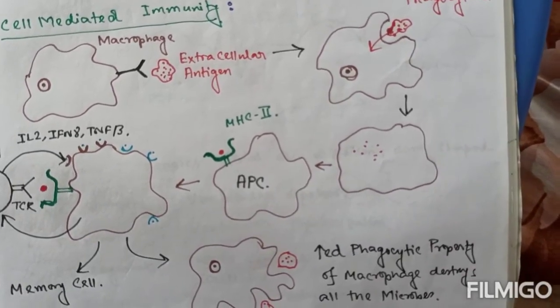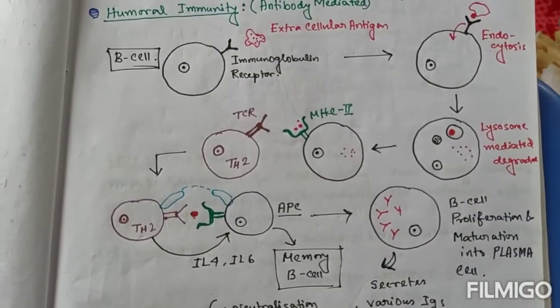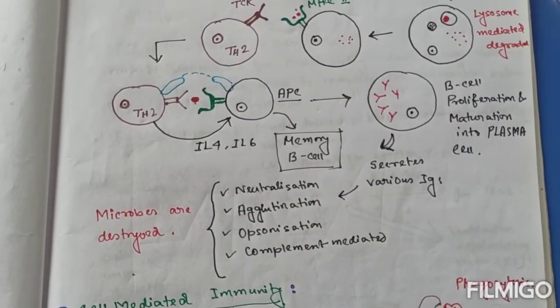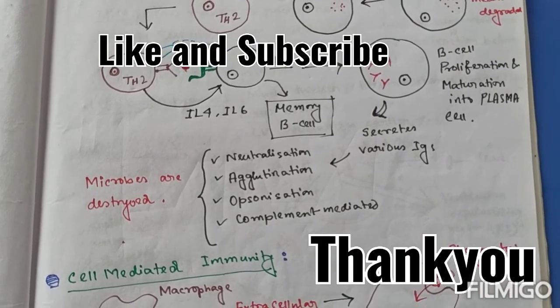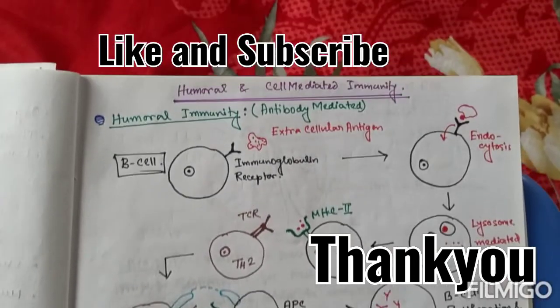So this is the significance of cell-mediated immunity and basic difference between humoral immunity and cell-mediated immunity. This is all about the two important types of acquired immunity. Thank you guys for watching.